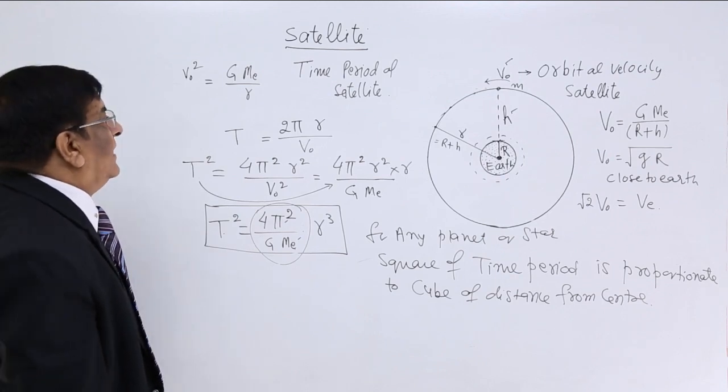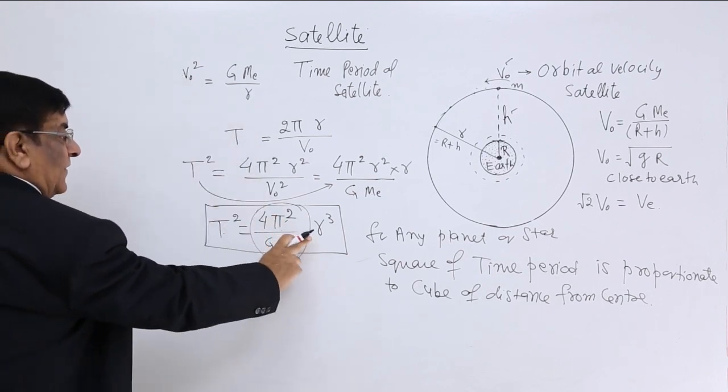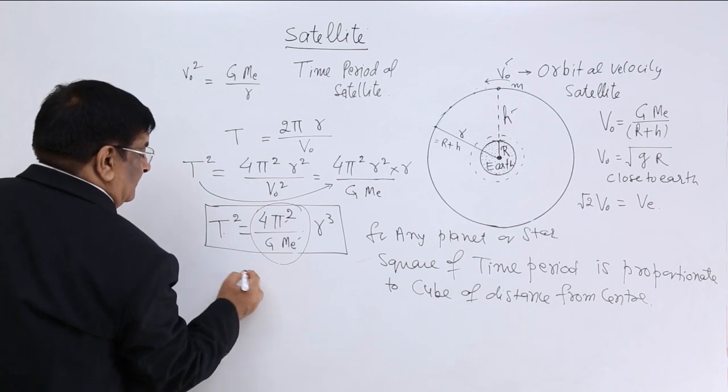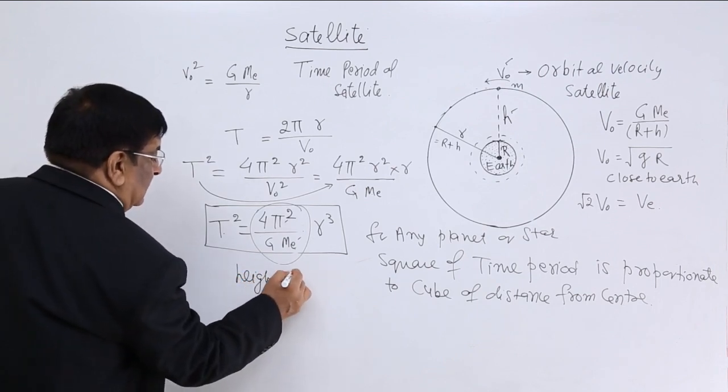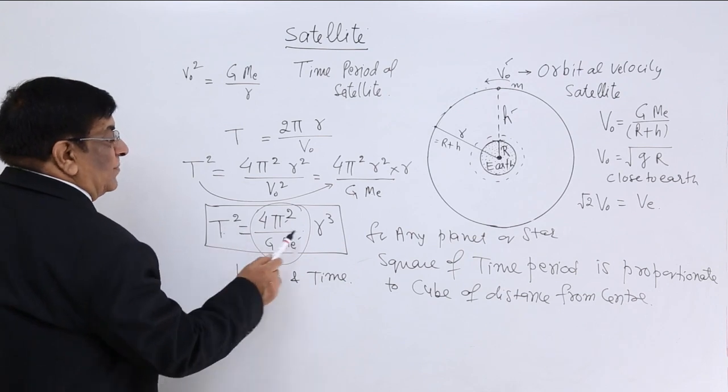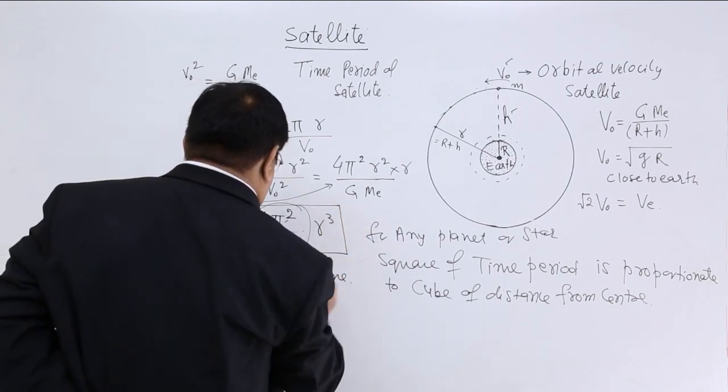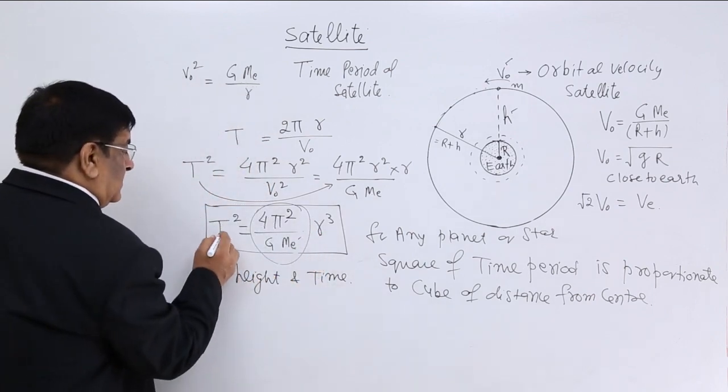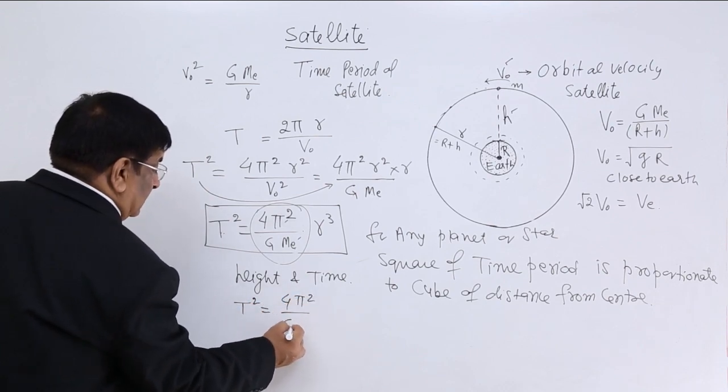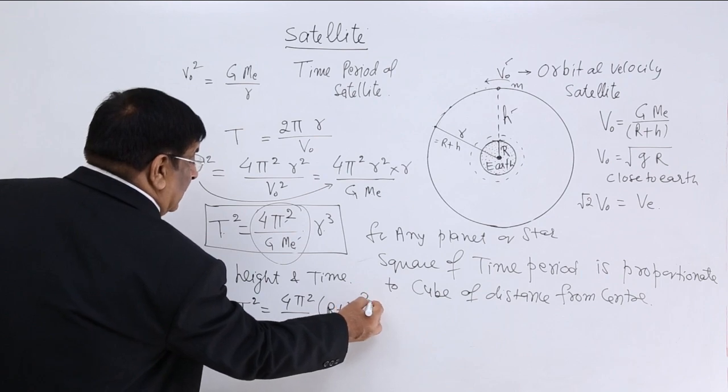Now, if you want to find out relation of height, relation of height with respect to velocity, relation of height with respect to time. How can we find with respect to time? This r is equal to, I will write here, height and time. Yes, you could remember it, t square proportionate to r cube. This is t square is equal to 4 pi square g me and this is r plus h to the power 3.